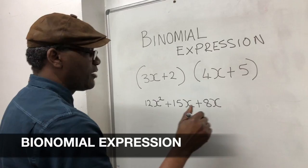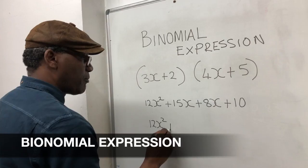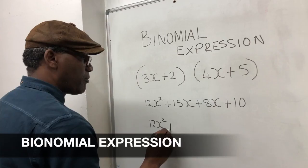Now you bring your expressions together. So we have 12x squared, plus 15x plus 8x is 23x, plus 10.